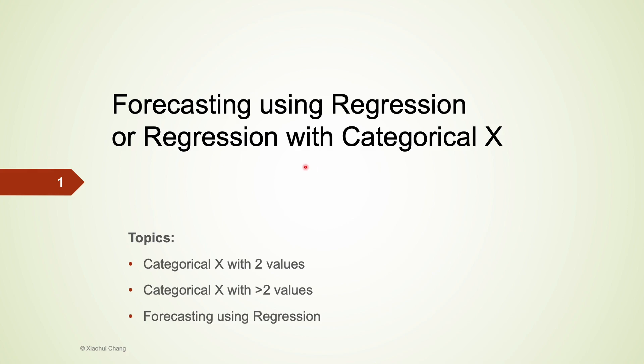In this video, we talk about a special type of linear regression where the independent variable x is a categorical variable. Our previous videos on linear regression include independent variables that are only numerical.